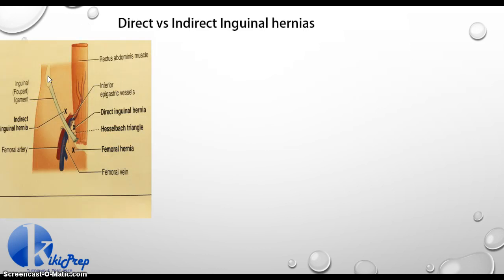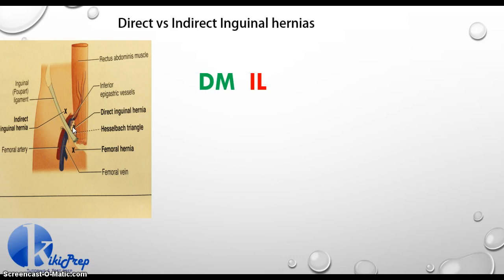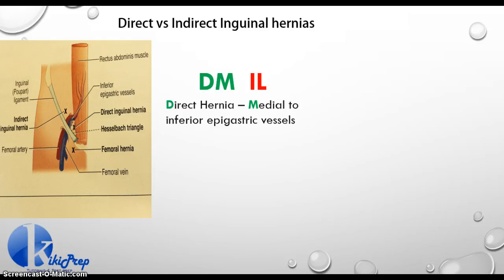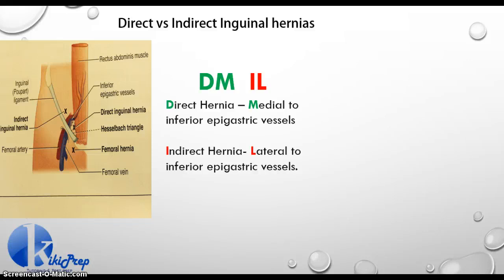To compare our direct versus indirect inguinal hernia, as you can see in this picture, you have your inguinal ligament and your inferior epigastric vessels up there. Your indirect is occurring lateral to your inferior epigastric vessels, and your direct is occurring medial to your inferior epigastric vessels, right there in your Hesselbach's triangle. To remember this, I use something called DMIL — Direct, Medial, Inferior epigastric, Lateral — meaning your direct inguinal hernia occurs medial to your inferior epigastric vessels and your indirect hernia occurs lateral to your inferior epigastric vessels.